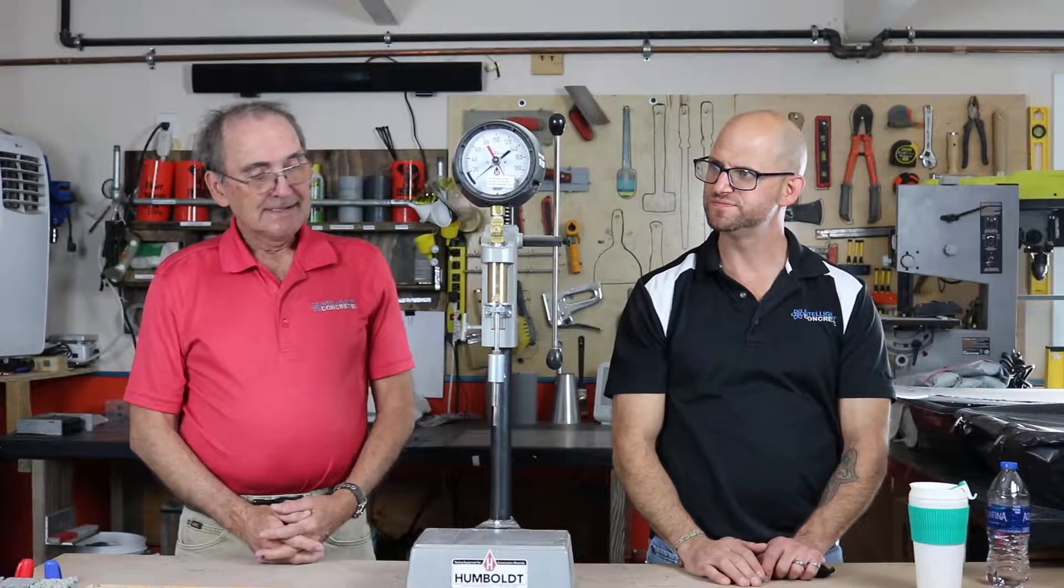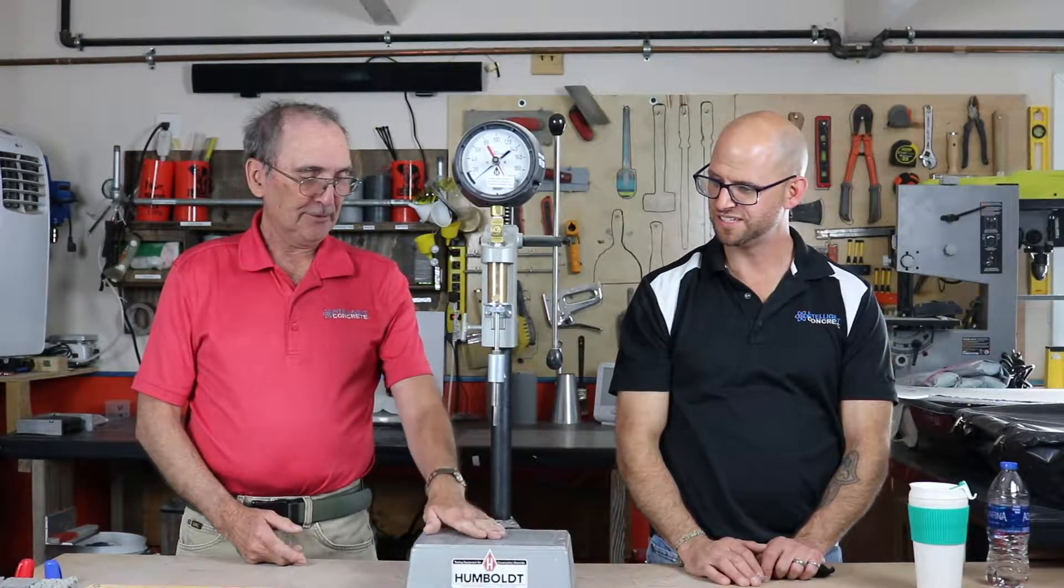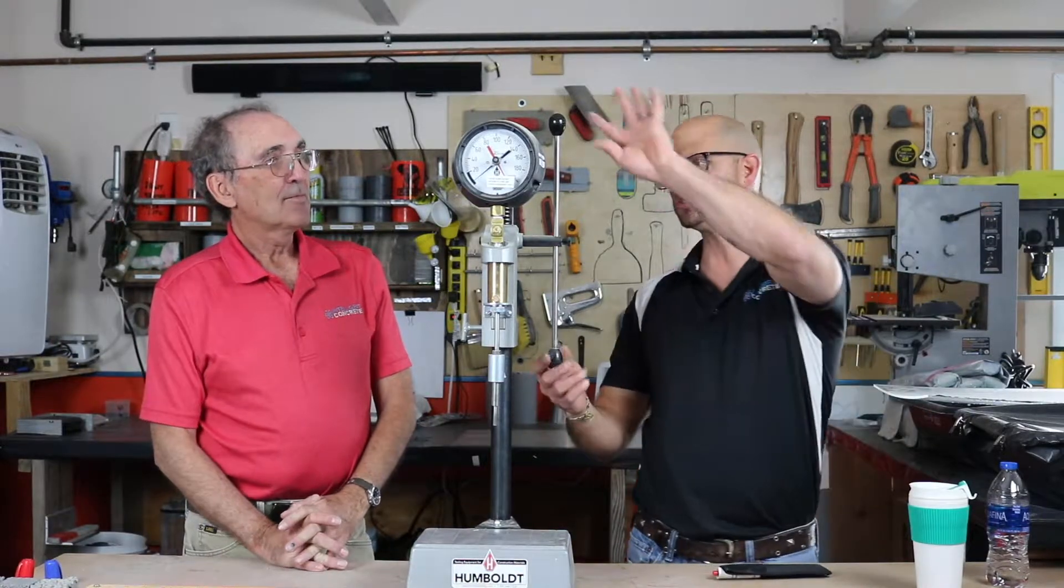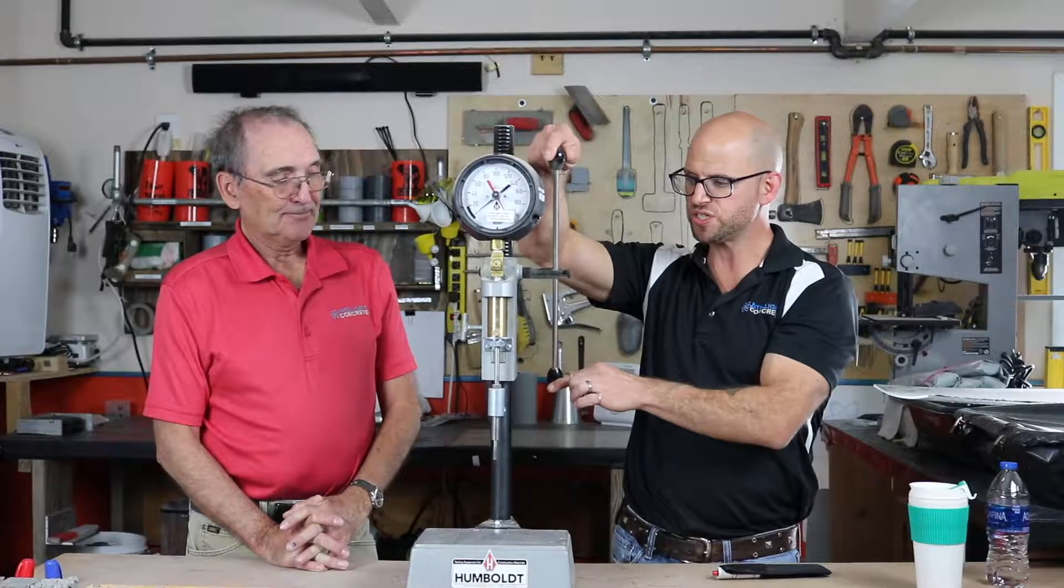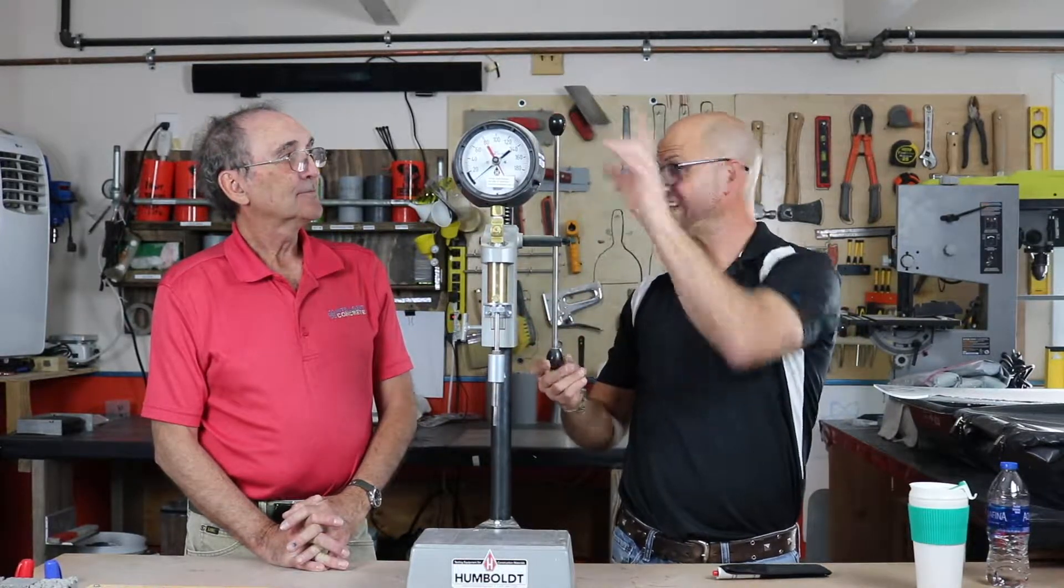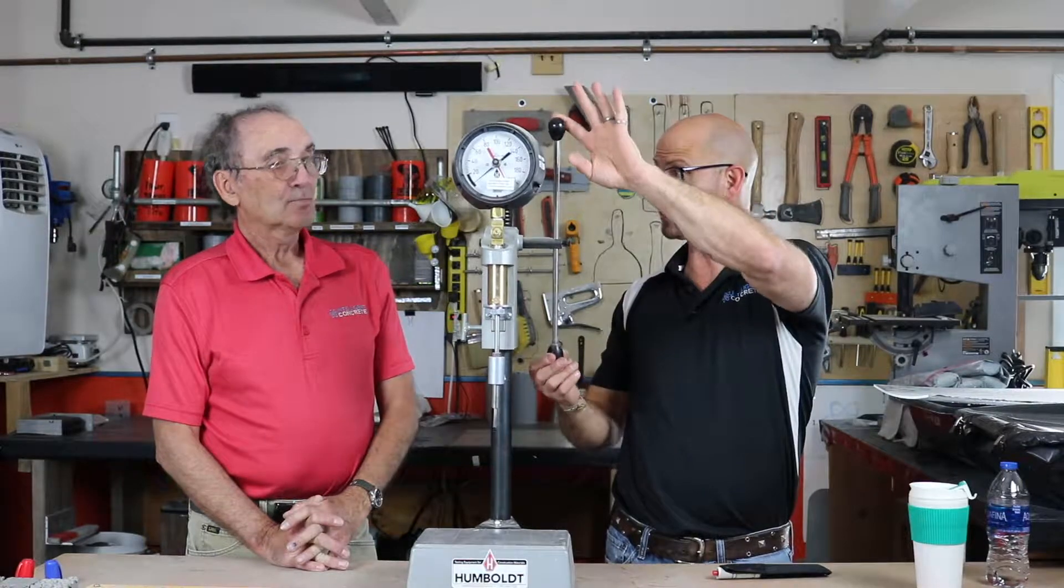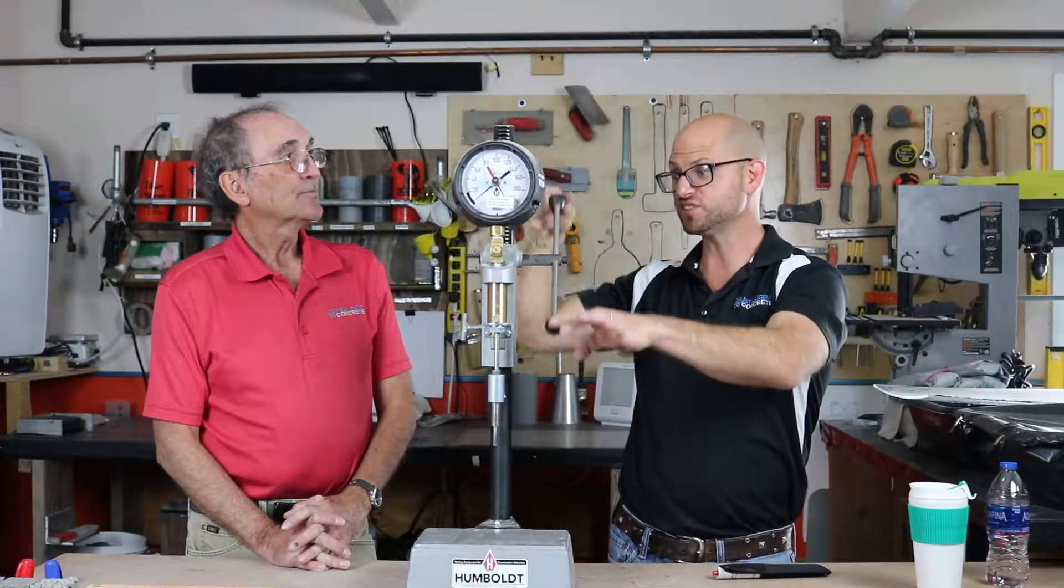David, do you know what this is? Well, looks like it does something to something down here. Exactly. ASTM C 403 time of set. This is a doohickey that helps us determine when the concrete reaches 500 PSI penetration strength, that's initial set, and then 2000 PSI penetration strength, which is final set.